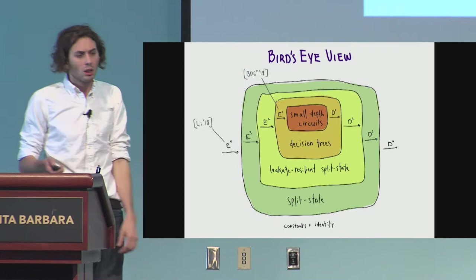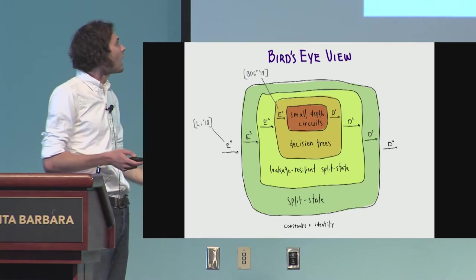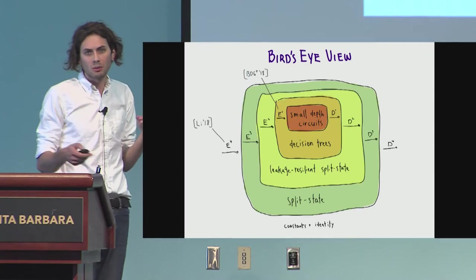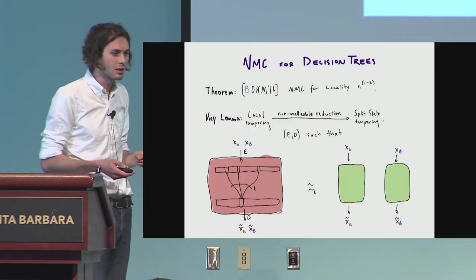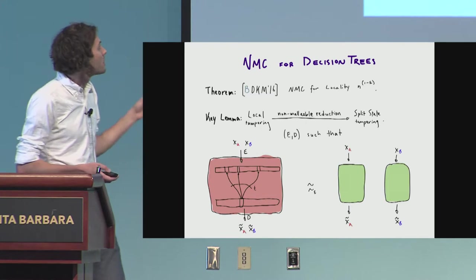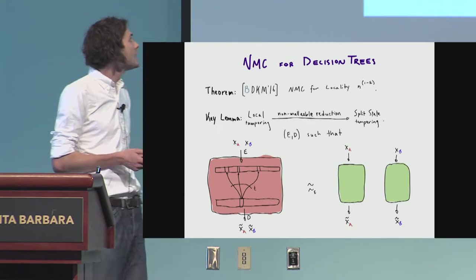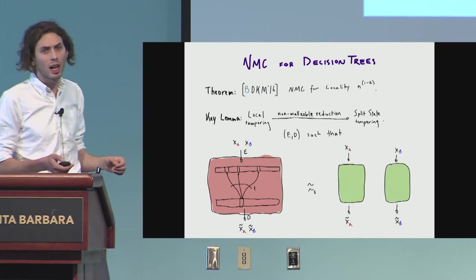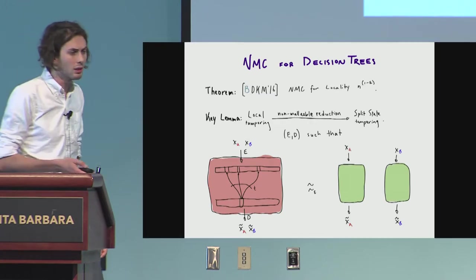So zooming in again, how are we going to construct these codes for decision trees? Looking ahead, we're going to have some more reductions, obviously. So what was our starting point? We were looking at this work from 2016, with this code for small locality.